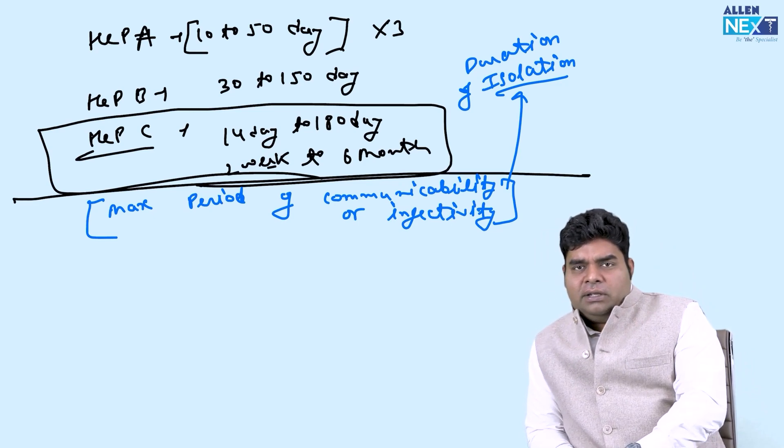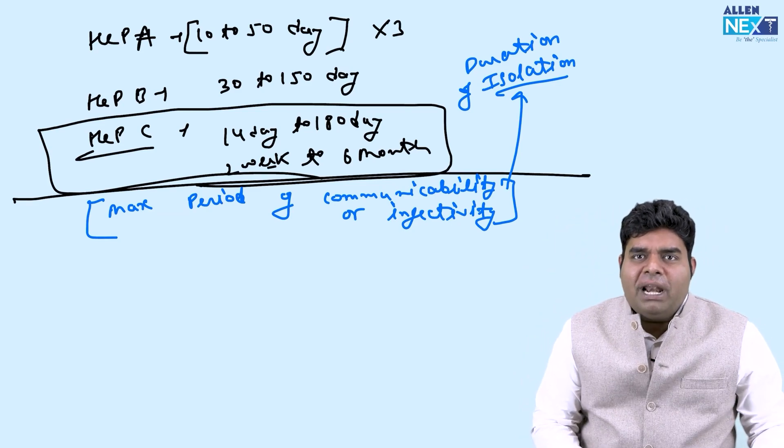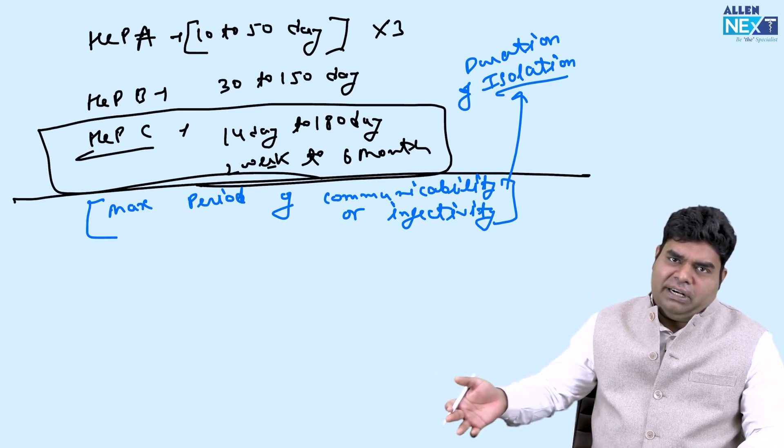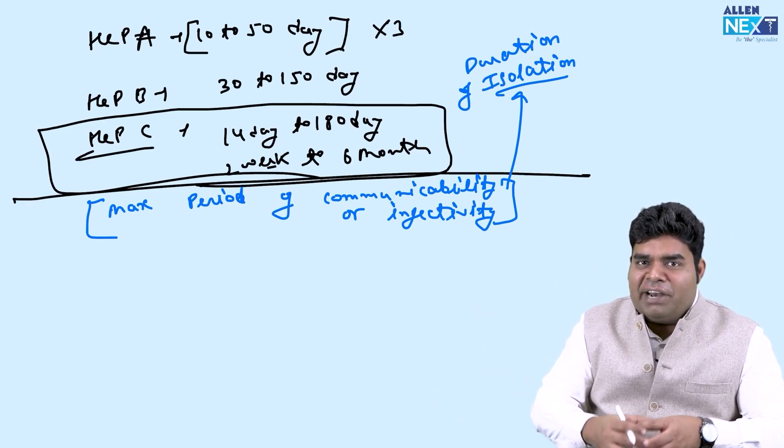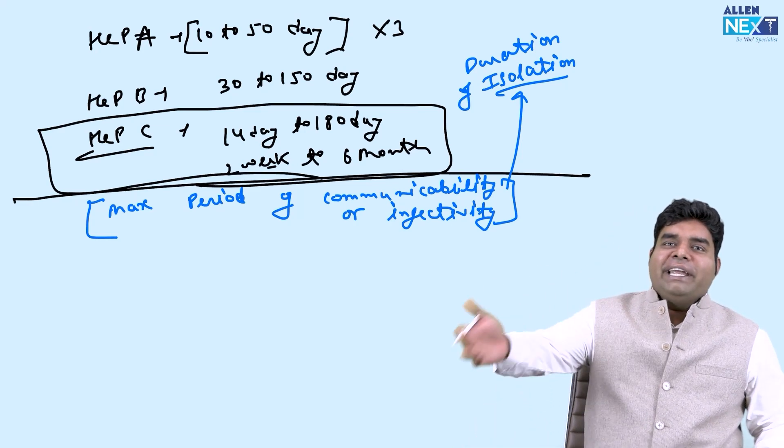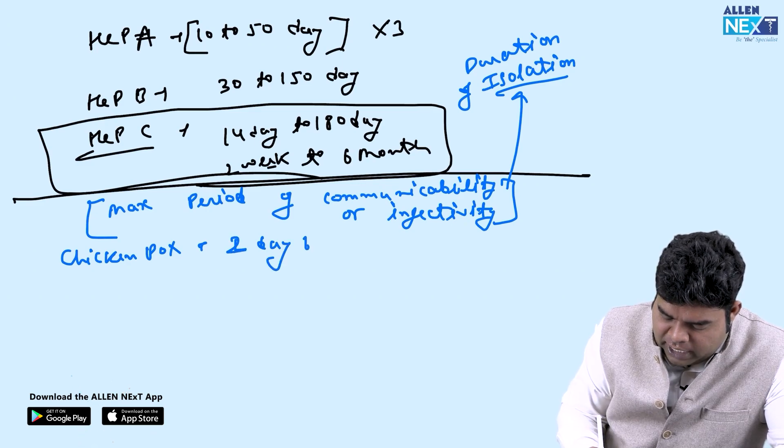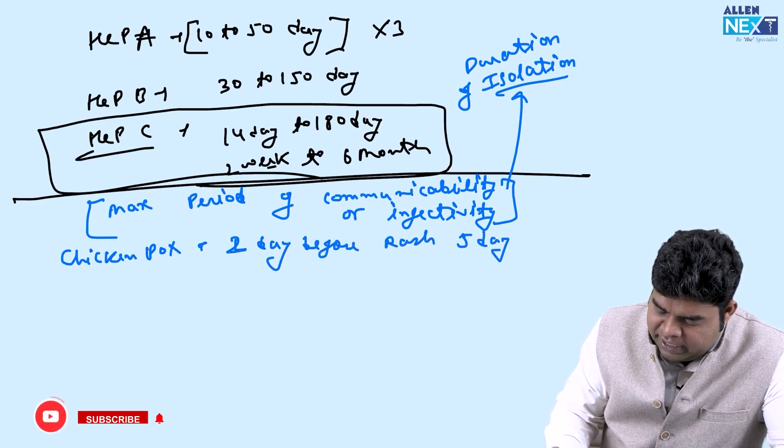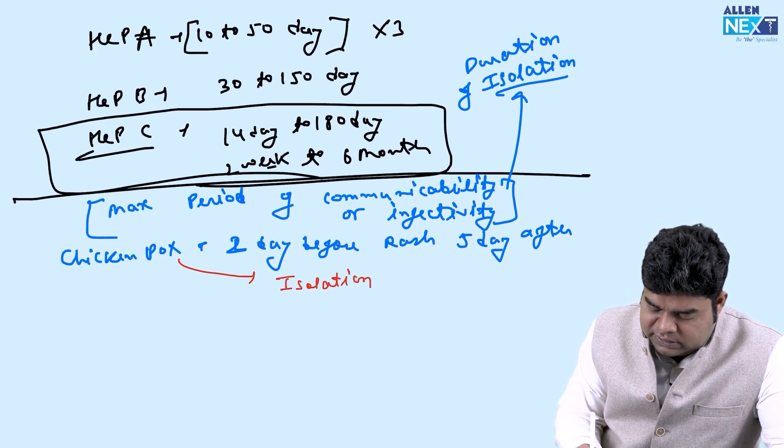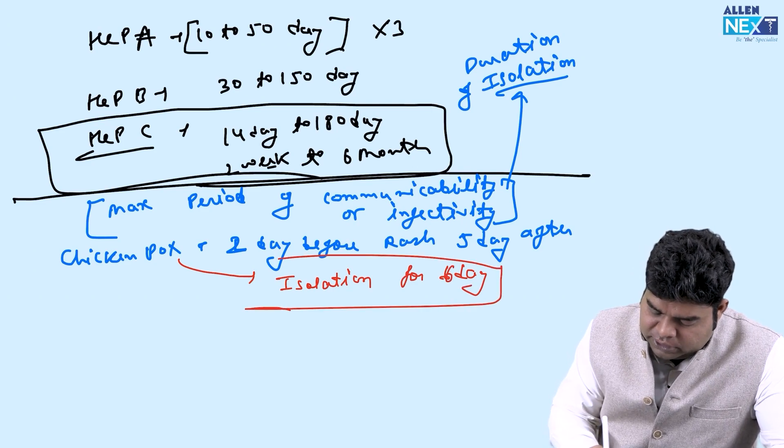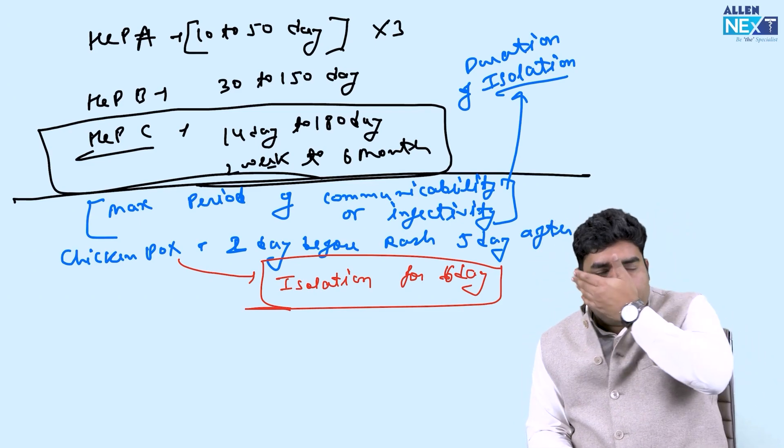Chicken pox: 2 days before rash, 5 days after. 2-5 for chicken pox, 4-5 for measles. They say in book it is written for chicken pox isolation for 6 days is done. 6 days isolation is done after the rash is there, we do not want to take any chance. So for 6 days we will isolate the person. It is written in Park textbook.